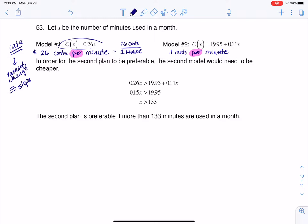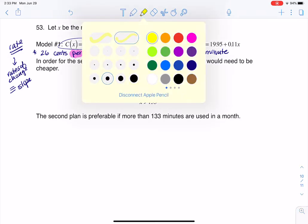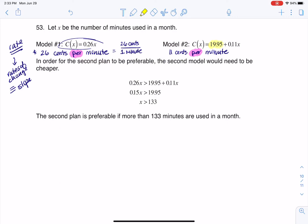Where the second plan, it's got this flat rate of, and let me color code this, it's got a flat rate of $19.95. And then it's going to charge you 11 cents per minute. And again, you can hear that as a slope, it's 11 cents for every one minute.